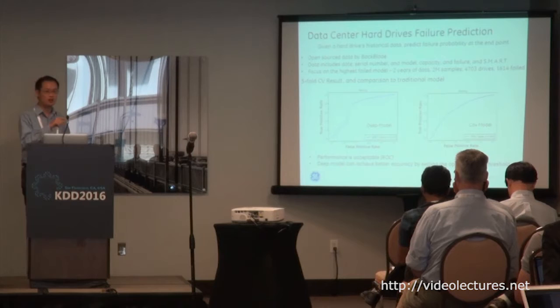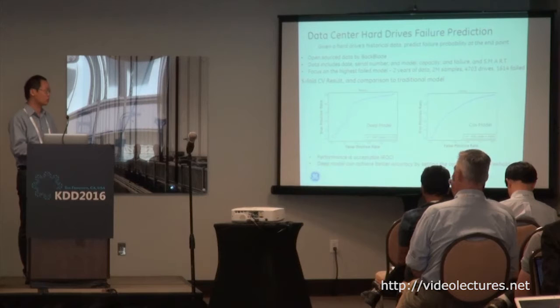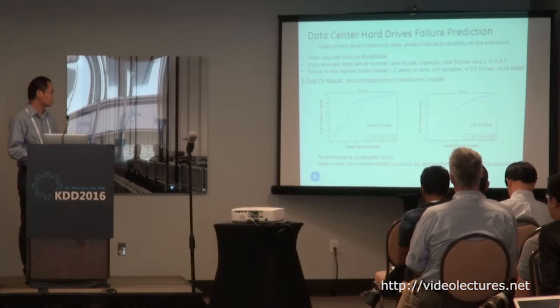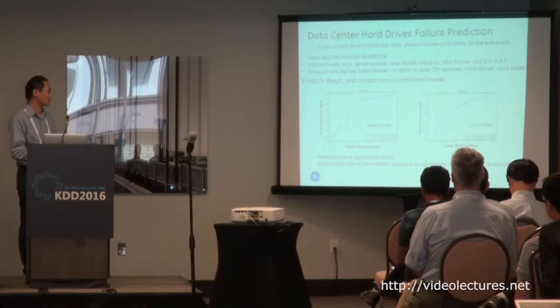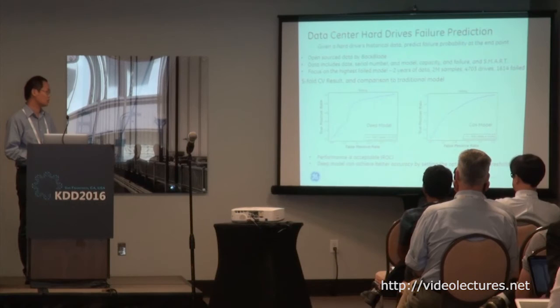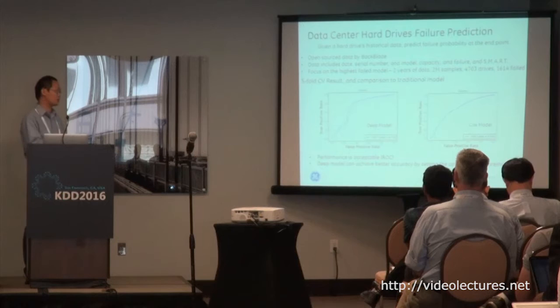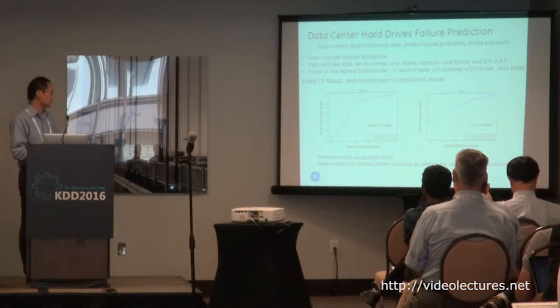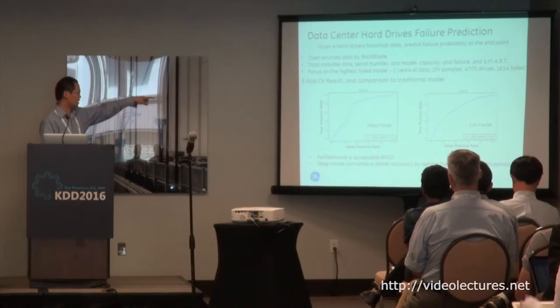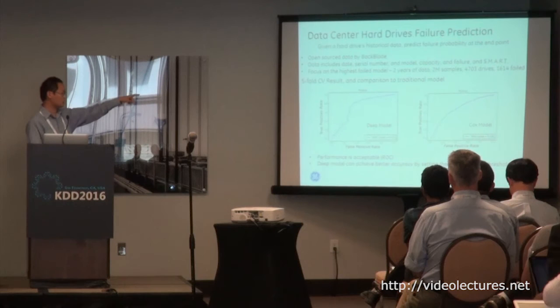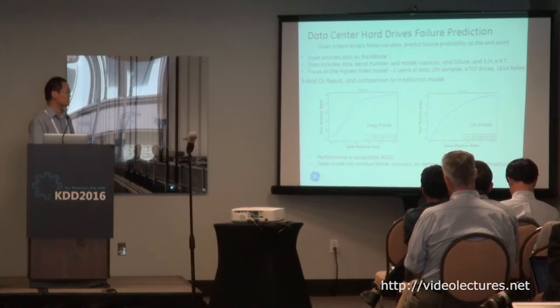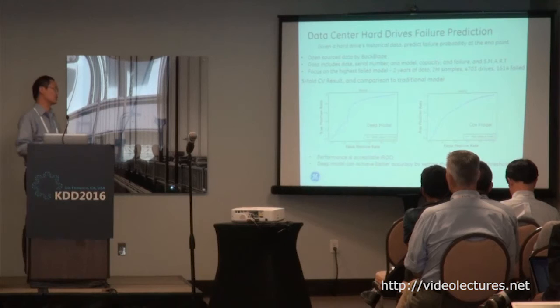I focused on one hard drive model that failed the most over the past two years, with only two main samples. There were around 4,700 drives in total, of which 1,600 failed. Instead of outputting failure probability over time, I used endpoint prediction to classify drives as good or bad. The deep model AUC is 0.72 and the Cox model is 0.69 — not dramatically better, but looking at the ROC curve, to achieve a true positive rate of around 0.8, the deep model gives a false positive rate below 0.4, whereas the Cox model gives around 0.6. So with the right threshold, the deep model can achieve meaningfully better results.